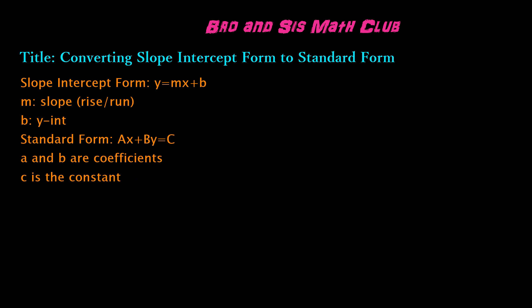The standard form of a linear equation is ax plus by equals c, in which a and b are the coefficients and c is the constant. Remember, when you're converting a linear equation from one form to another — in this case slope-intercept form to standard form — you're just rewriting the equation by moving the terms around, changing from y equals mx plus b to ax plus by equals c.